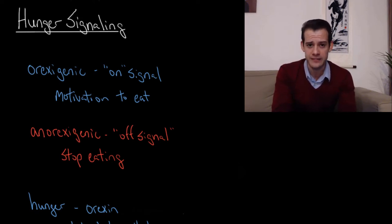So in this video I want to take a look at hunger signaling in more detail in order to see the complexities of this process. So we'll start with a basic overview which is that there's two parts to this signal. We have an on signal telling us to eat and then an off signal telling us to stop eating.